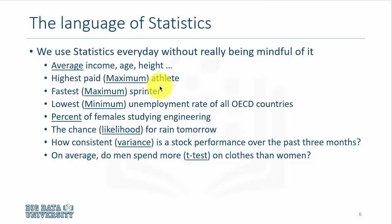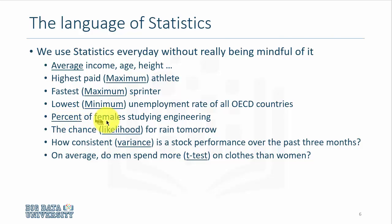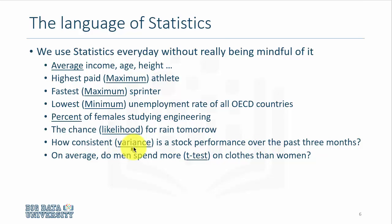Highest paid athlete — we are looking at the maximum salary. Fastest sprinter — we are looking at the maximum speed. Lowest unemployment rate of all the OECD countries — we are looking at a minimum value. Percentage of females who study engineering requires us to compute percentages. The chance for rain tomorrow is, in fact, likelihood. And how consistent is the stock performance over the past three months — we are concerned about variance, which again is a statistical parameter.